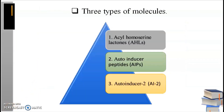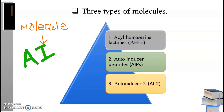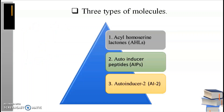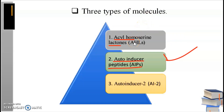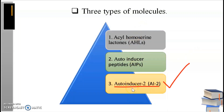Bacteria produce certain chemicals in the quorum sensing phenomenon that are diffusible and have low molecular weight. These aggregate in the surroundings and are called messenger molecules, or autoinducers. In quorum sensing, different types of autoinducers are used. The three most commonly used molecules are: first, acyl homoserine lactones; second, autoinducer peptides; and third, autoinducer 2.